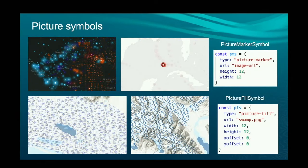You can also do picture symbols — everything from creating a firefly effect with glowing points, to an animated GIF showing a moving hurricane along a path, or picture fills where you can fill a polygon with a repeating picture, such as swamp or glacial textures. The API is straightforward: you just point to an image URL and specify properties like height and width.